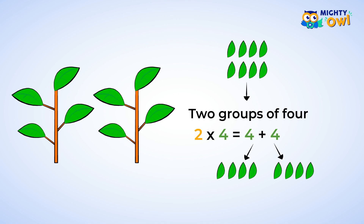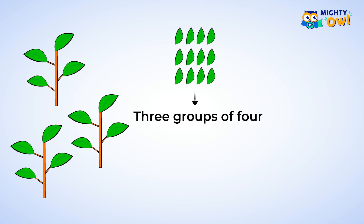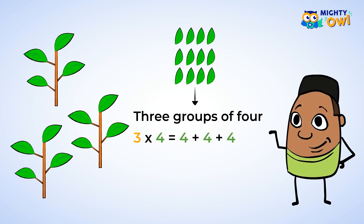Two times four, or four plus four, is eight. Two groups of four leaves have a total of eight leaves. What about if you add another group of four leaves? To find the total number of leaves, you can multiply three times four. This can also be written as four plus four plus four, and you can count them to find out that the total number of leaves is twelve.